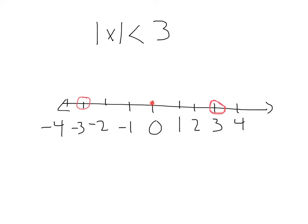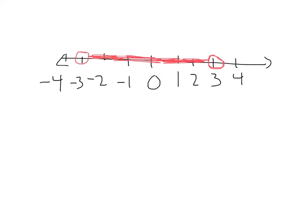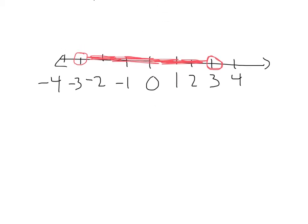So I know that all these spaces in between — this is 1 space from 0, 2 spaces from 0 — all the values in between are less than 2 spaces away from 0. And remember, how we write our answer for this one is you just say that x is in between the values of negative 3 and 3.